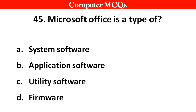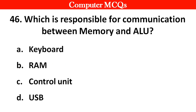Next question: Microsoft Office is a type of — Options A. System software, B. Application software, C. Utility software, D. Firmware. Right answer is option B: Application software.